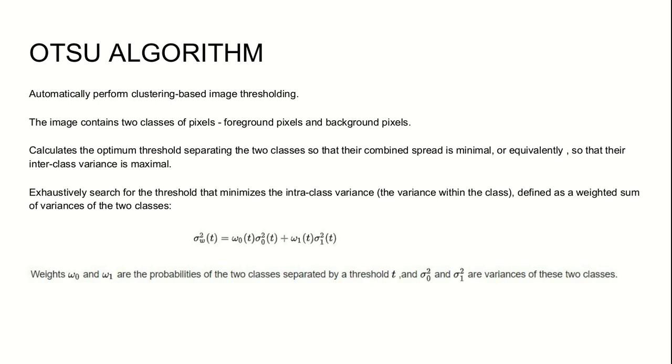We are calculating the optimum threshold which is separating those two classes so that the combined spread is minimum or the inter-class variance will become minimum. An exhaustive search for the threshold which minimizes the inter-class variance, which is defined as a weighted sum of the variance of two classes. So what we are doing in OTSU is computing that threshold value.